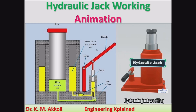Firstly, we will look at the parts of the hydraulic jack system. It consists of a pumping piston, also called a pump, and a reservoir where the oil is stored at low pressure. There are lines connecting the reservoir to the main piston or jack piston. The pumping piston is operated by a handle which is pivoted at one point.